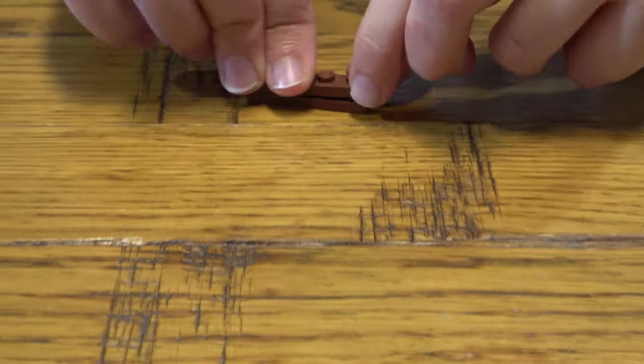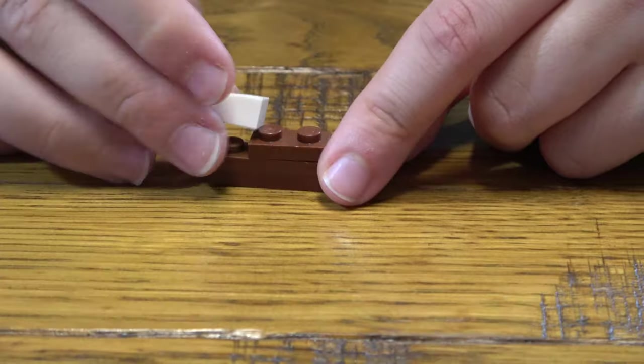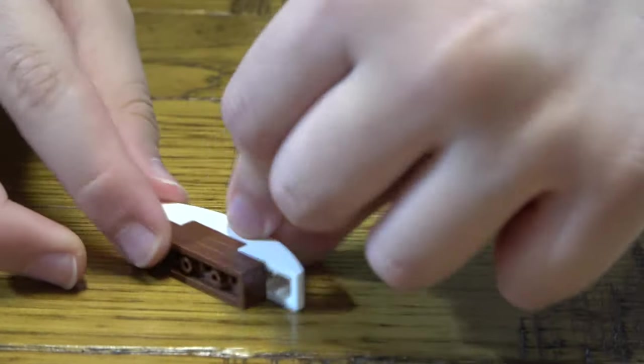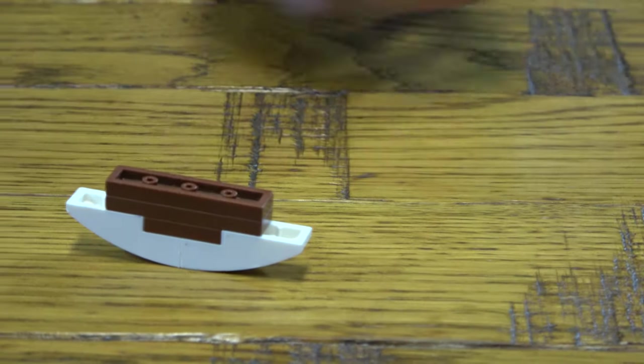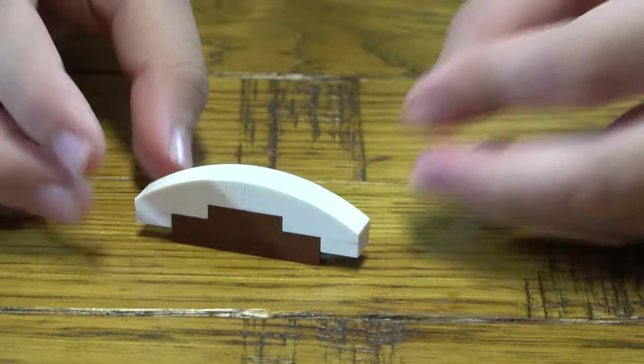First thing we need to do is get this here. Place that there, turn it underneath. Place two of these right like that, and place that there.